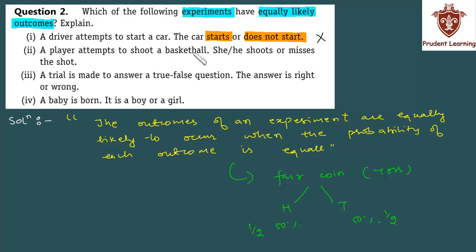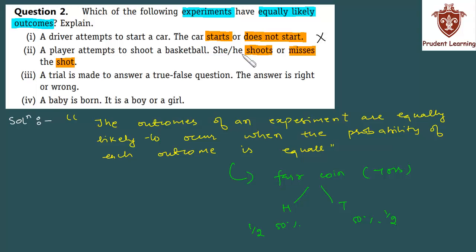Second section: a player attempts to shoot a basketball — she or he shoots or misses the shot. यहाँ भी basketball को shoot करना player की skill पर depend करेगा. Question में कहीं mention नहीं है कि player कितना skilled है. तो ball shoot हो या ना हो — जो दोनो outcomes हैं उनकी probability equal नहीं होगी, player की ability पर depend करेगा. Since दोनो outcomes equal probability वाले नहीं हैं, इसलिए यह second section भी equally likely outcomes वाला नहीं है.